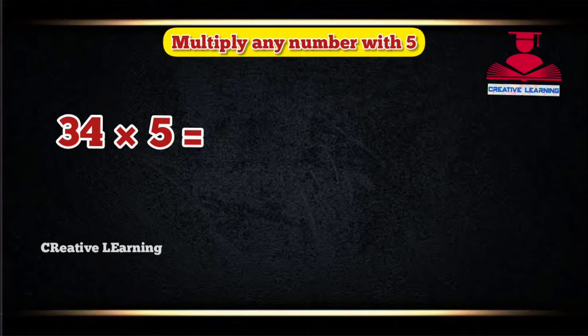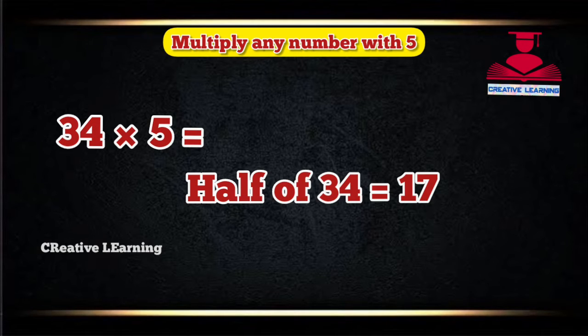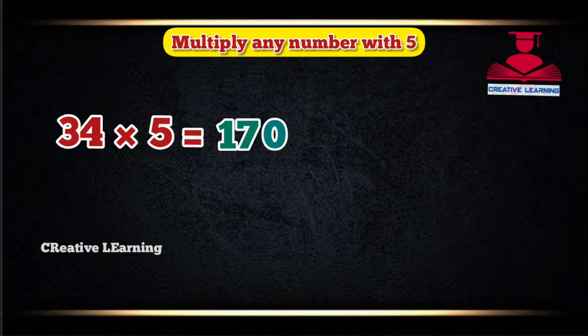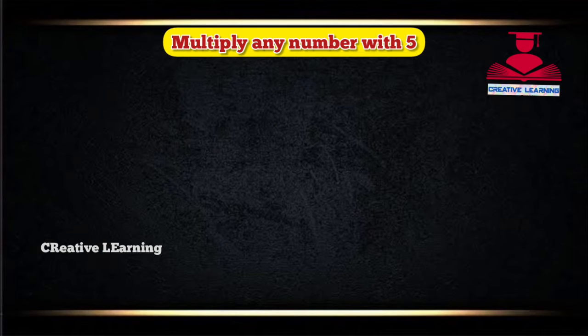Let's multiply 34 with 5. First, we have to half 34. Half of 34 is 17. As we know, 34 is an even number, so 0 on the right-hand side. So our answer is 170. Let's multiply 67 with 5.